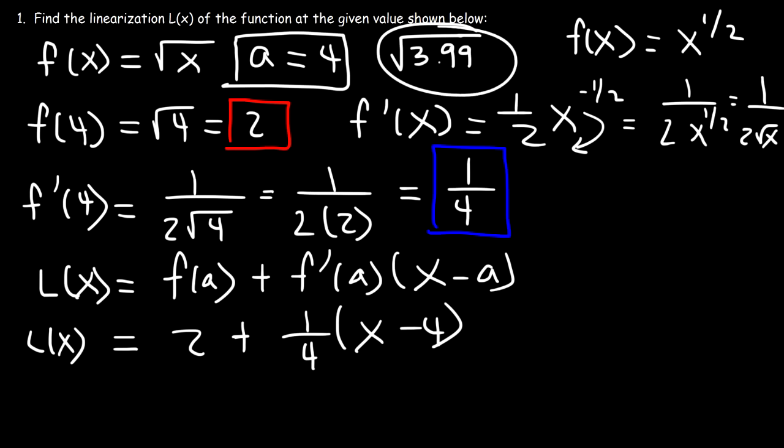Now, let's estimate the square root of 3.99. So, first, let's get the exact answer with a calculator. So, if you type it in, this is equal to 1.997498436. Those are the numbers that my calculator gave me. So, now, let's use L(x).